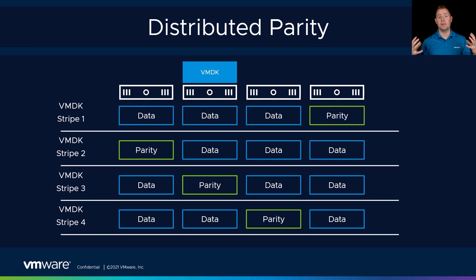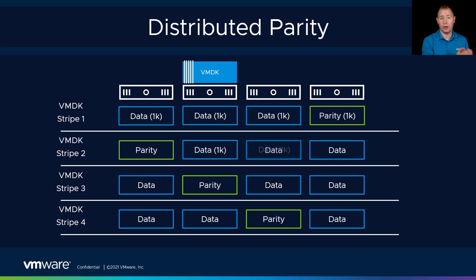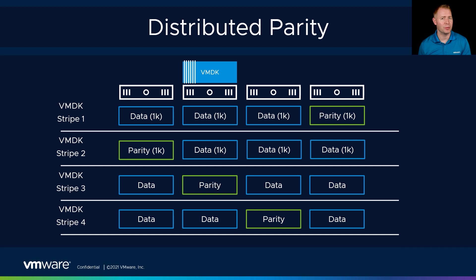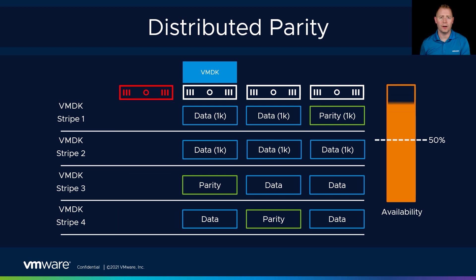We take that 300-gig VMDK and start breaking it up into 1K chunks, spreading that across each individual host. For our parity, that's also going to be 1K in size. So we've got our 300-gig VMDK plus 100 gigs for parity — our RAID 5 policy would use 400 gigs total. With that 400 gigs, we can tolerate a single failing host, because if I lost any of those pieces, I can recover using the ledger and the remaining components.